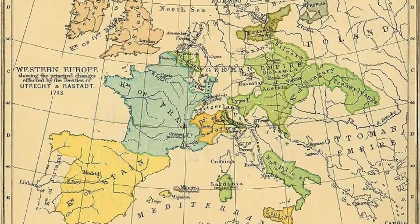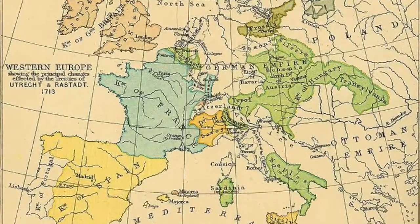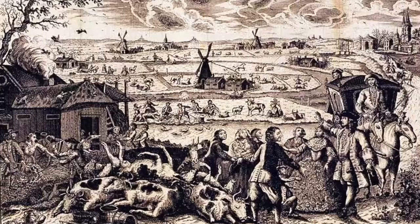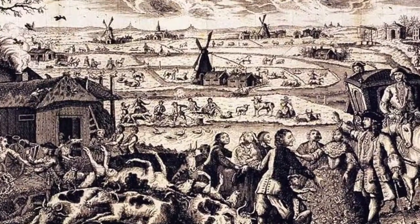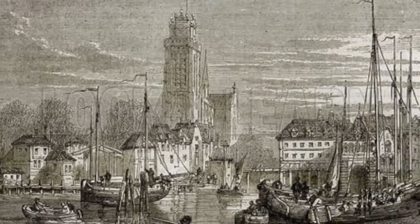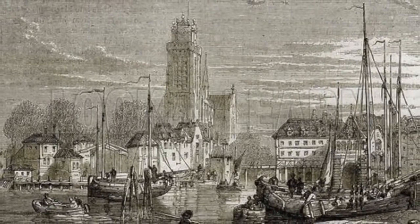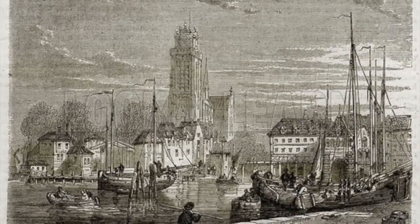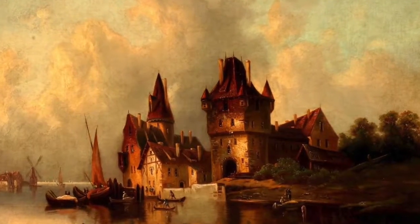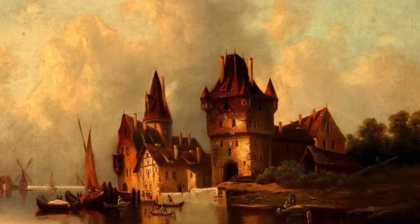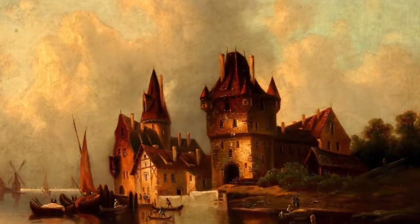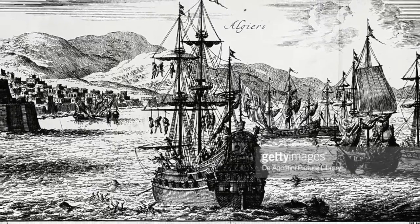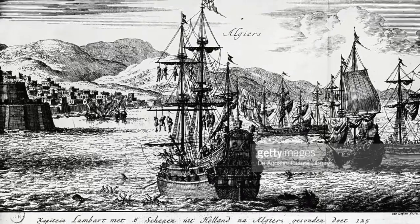After gaining independence from the Spanish, the Netherlands were able to create a vast trading empire. Through their Dutch East India Company, the country controlled the East Indies — now Indonesia — parts of the Caribbean, and South Africa. They controlled the majority of the spice trade and grew very wealthy.